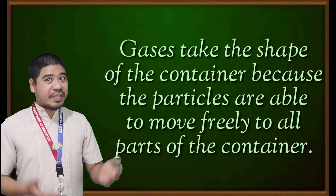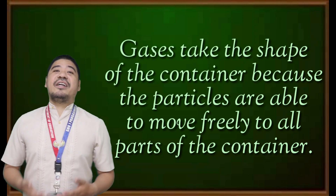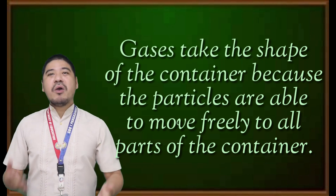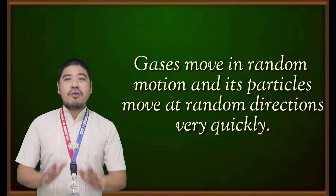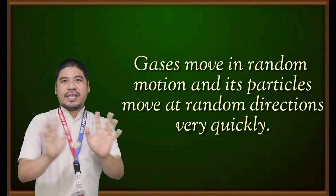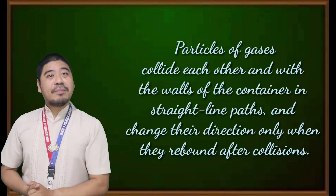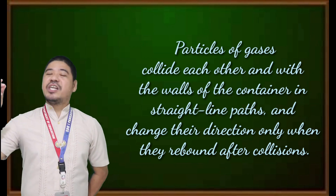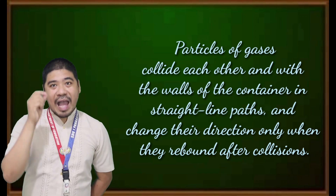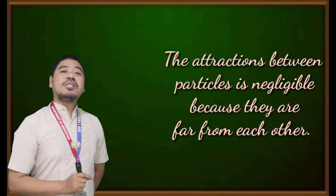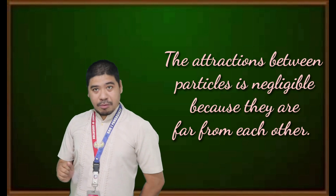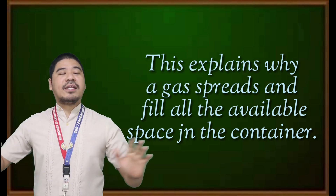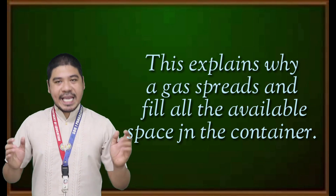Gases take the shape of the container because the particles are able to move freely to all parts of the container. Gases move in random motion, and their particles move in random directions very quickly. Particles in gases collide with each other and with the walls of the container in a straight line, and change their direction only when they rebound after collisions. The attraction between particles is negligible because they are far from each other. This explains why a gas spreads and fills all the available space in the container.